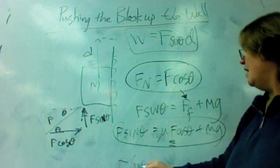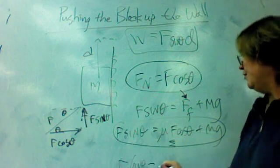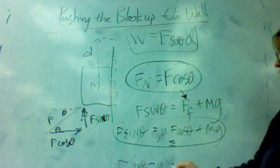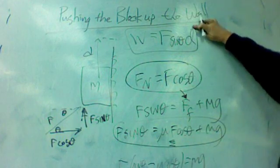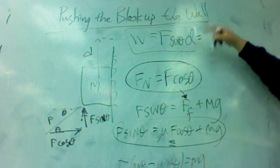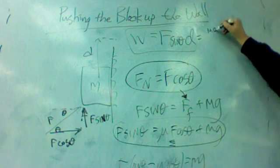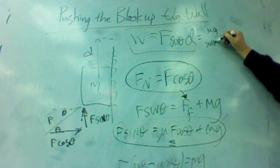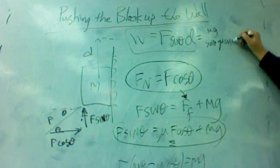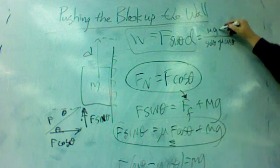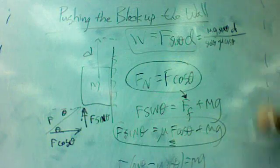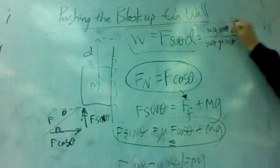Sine theta minus, if I move this term over, mu cosine theta equals mg. So this is ultimately going to be mg over sine theta minus mu cosine theta. There's the F and then the sine and then the D. And if you plug everything in now, it should work.